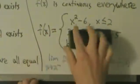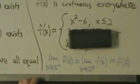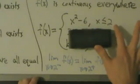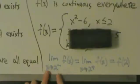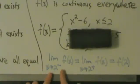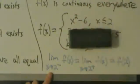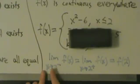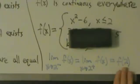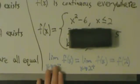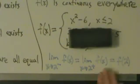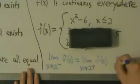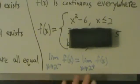We can actually ignore the equals f of 2 condition here, because f of x is x squared minus 6 for x less than or equal to 2. So if x approaches 2 from the left, we're on this piece, which is a polynomial and continuous. That means we automatically know the limit as x approaches 2 from the left of f of x already equals f of 2. So all we really need to show is that the left-hand limit equals the right-hand limit.